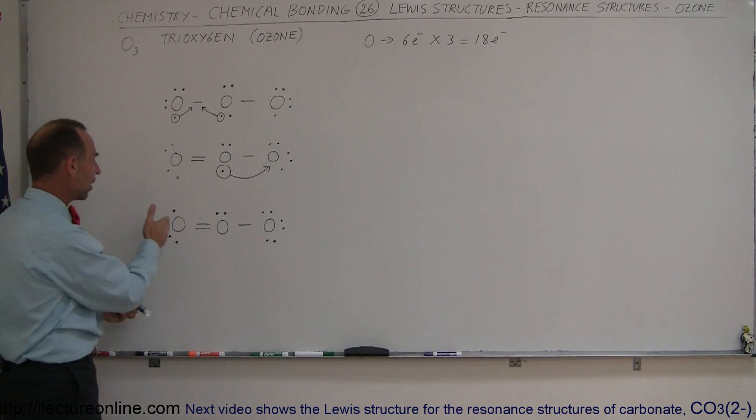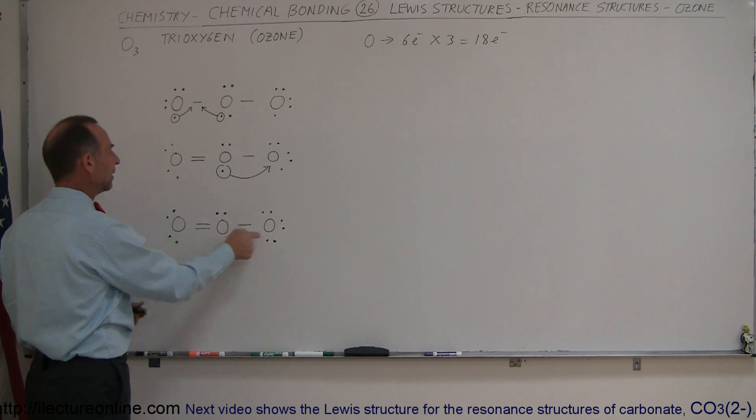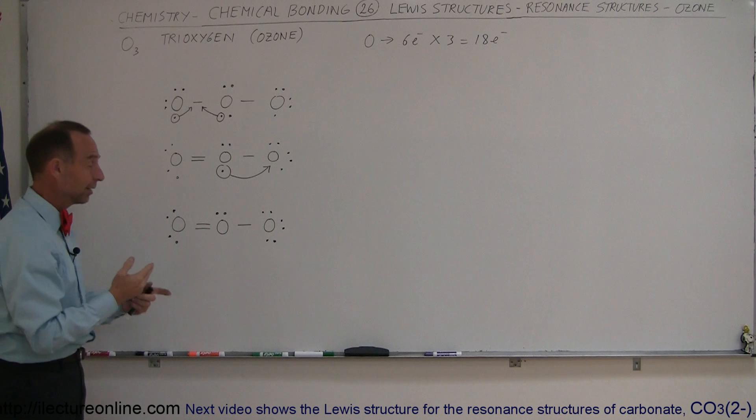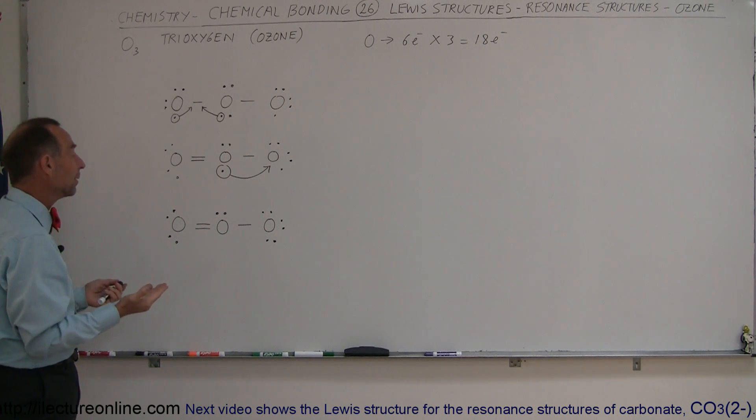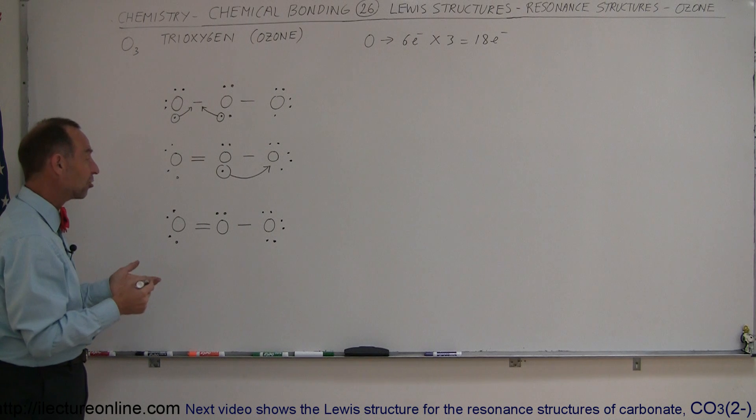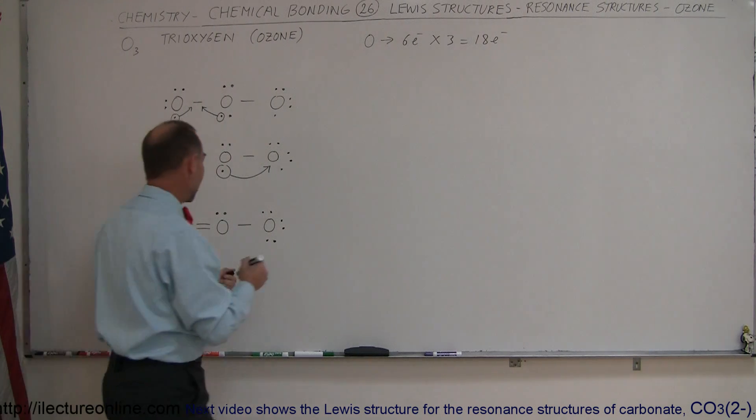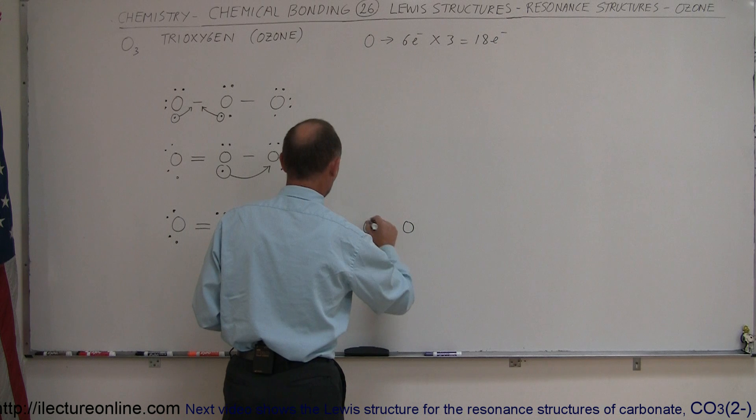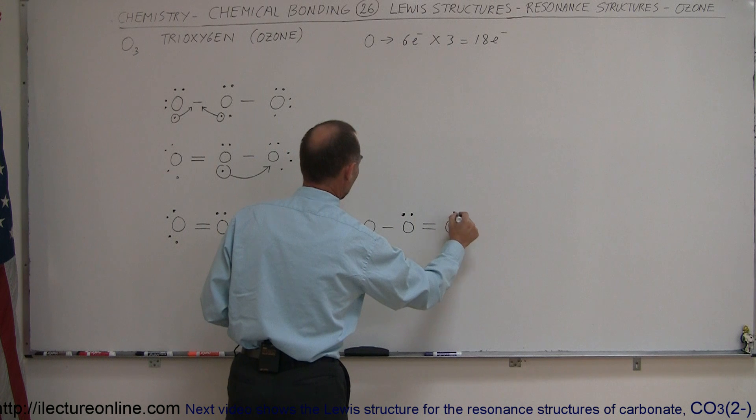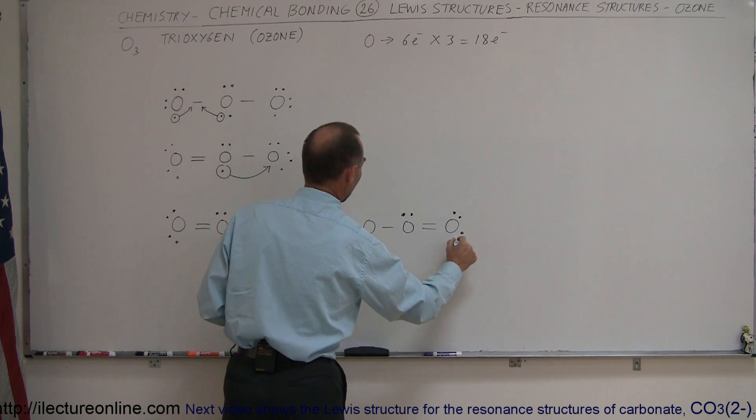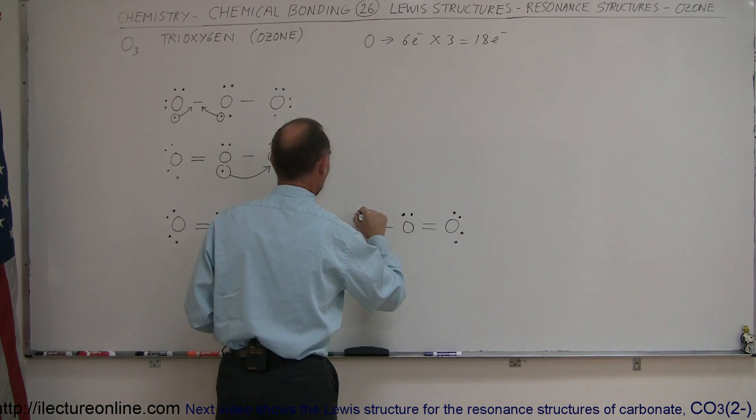However, why would this oxygen form a double bond, and this one form a single bond with six valence electrons? Why not the other way around? The other way around can happen just as well, with an equal probability. So what could happen is that actually we can have this as a Lewis structure, an oxygen in the middle, one over there, one over there, with a single bond, a double bond, two electrons over here, four electrons like this, and six electrons like that.